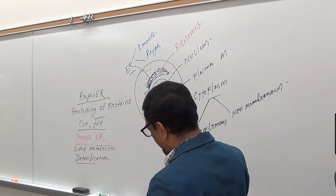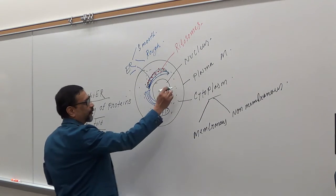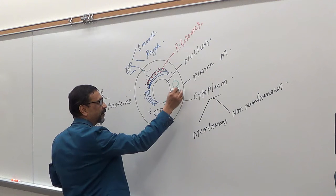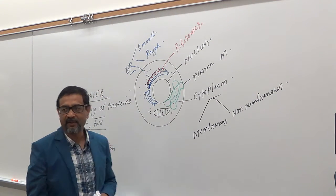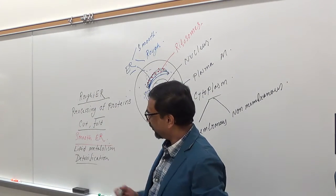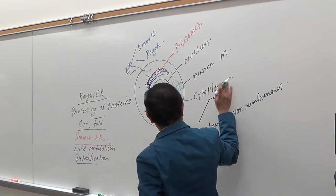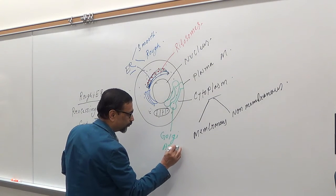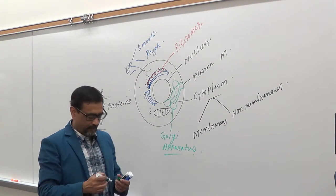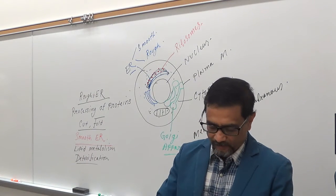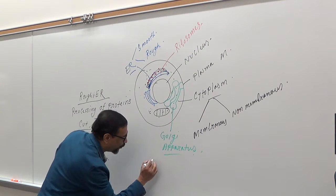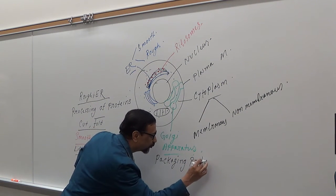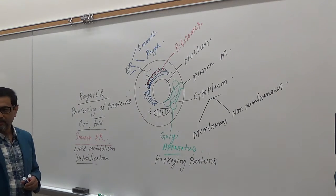Another structure is the Golgi apparatus — flattened sac-like structures piled together, with both ends expanded. They are packed together. You can see the green structures in the image. The main function of the Golgi apparatus is packaging proteins.